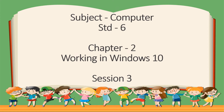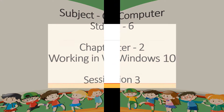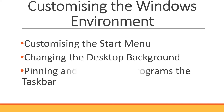Subject: Computer, Standard 6, Chapter 2 – Working in Windows 10, Session 3: Customizing the Windows Environment. When working with Windows, we can customize the appearance and functionality of the computer according to your preferences. Some of the customization options include customizing the start menu, changing the desktop background, and pinning and unpinning programs from the taskbar.